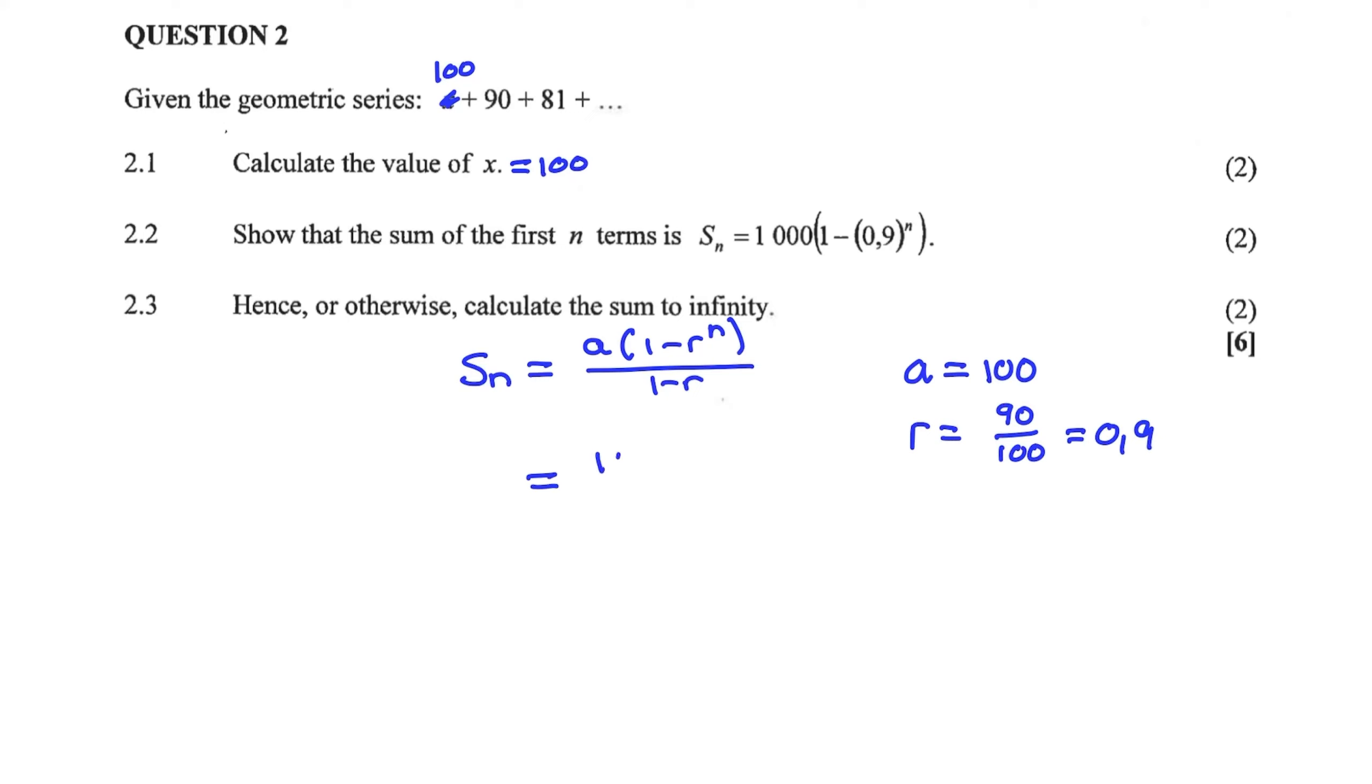Now I can substitute the A value and the R value into my equation. And if I simplify, I have 100 over 1 minus 0.9 to the power of n over 0.1. But 100 divided by 0.1 is equal to 1000.